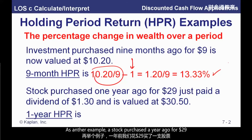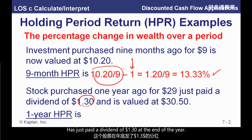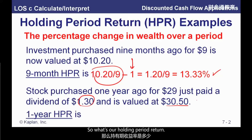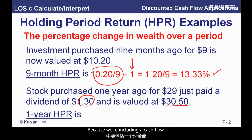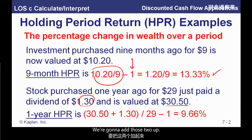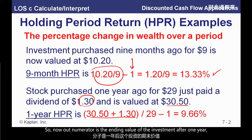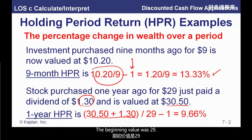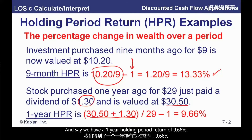As another example, a stock purchased a year ago for $29 just paid a dividend of $1.30 at the end of the year, and after paying that dividend its value is $30.50. Here we've got a total return because we're including a cash flow. We add the cash flow and the ending value together, so our numerator is the total ending value of the investment after one year. The beginning value is $29 — ending over beginning minus one — giving us a one-year holding period return of 9.66%.